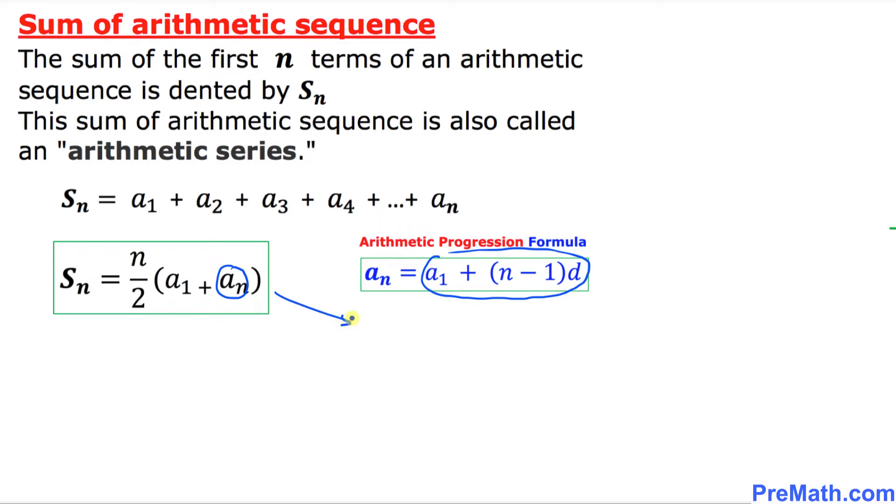So this S of n could be written as S of n equals n over 2 times I'm going to leave this a sub 1 right up here plus, so this one is a sub n, I'm going to replace it by this whole quantity. I'm going to put down a sub 1 plus n minus 1 times d.